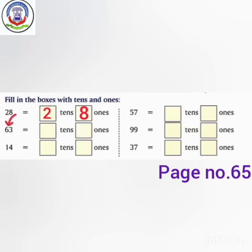Next is 63. We have to write 1s here and 10s here. Now how many 10s do we have? We have 6 tens. How many 1s do we have? We have 3 ones. So here we have 6 tens and 3 ones.